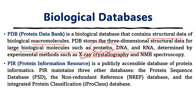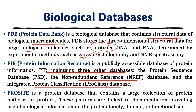Fifth, PIR, Protein Information Resources, is a publicly accessible database for protein information. PIR maintains three other databases: the Protein Sequence Database (PSD), the Non-Redundant Reference (NREF) database, and the Integrated Protein Classification (iProClass) database. Sixth, PROSITE is a protein database containing a large collection of protein patterns or profiles. These patterns are linked to documentation providing useful biological information about protein families, domains, and functions.